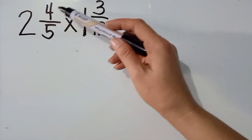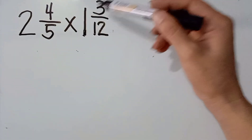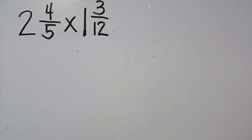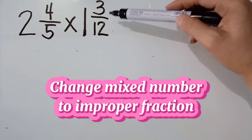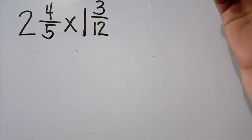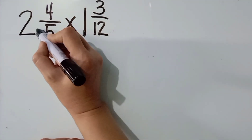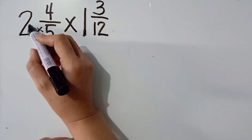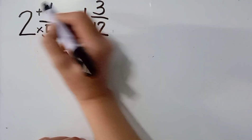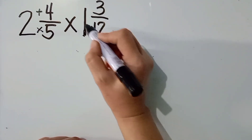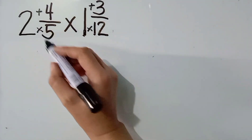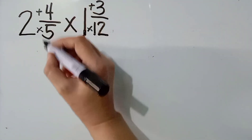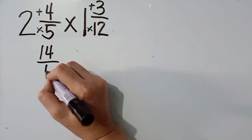Example number 3: 2 and 4 fifths times 1 and 3 twelves. So again, we are multiplying mixed numbers. So, that's the first thing that we are going to do — we are going to change the mixed numbers to improper fraction. We are going to multiply the denominator sa kanyang whole number and then add natin sa numerator. So, let's start. 5 times 2, the answer is 10. 10 plus 4, the answer is 14 over 5.